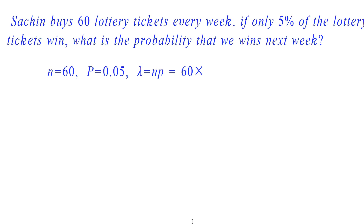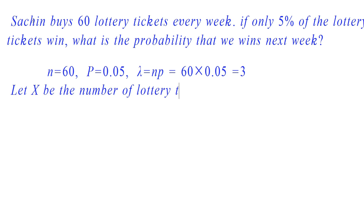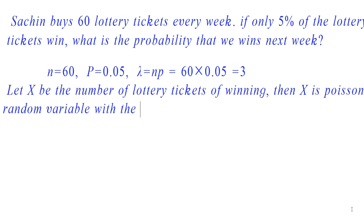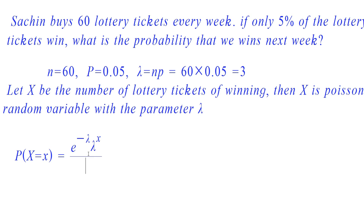Now we have to find the parameter lambda. We know that lambda is equal to NP, that is equal to 60 into 0.05, which is equal to 3. Let x be the number of lottery tickets winning. Then x is a Poisson random variable with parameter lambda. Then we use the Poisson approximation formula.